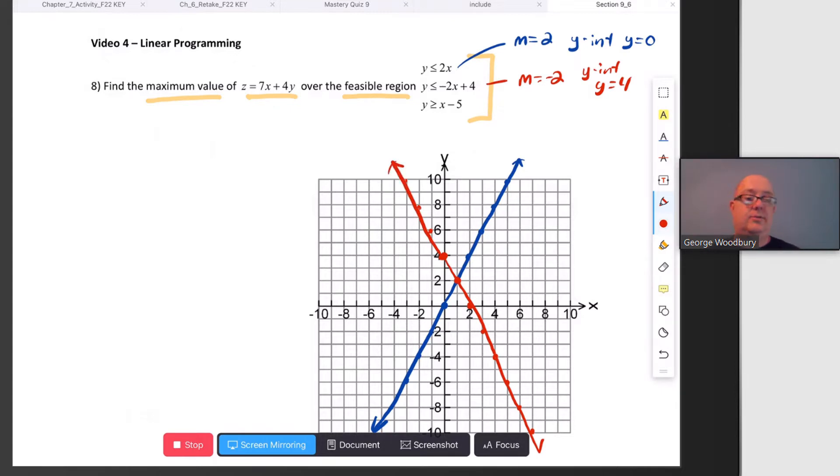This time, we wanted y to be below that, so we were looking at this region and this region. Below the red line is region 2, so we're now looking down here. We'll graph the third line and figure out what part of it's shaded inside of that triangular region at the bottom. Let's use our third color. This one has a slope of 1, a y-intercept at -5, and this time,